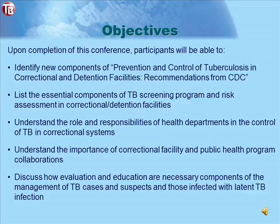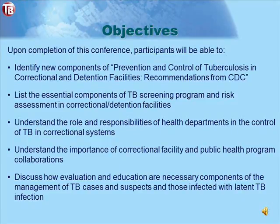The objectives for today's program are listed on this slide. TB control remains a public health challenge in correctional and detention facilities in which persons from diverse backgrounds and communities are housed in close proximity for varying periods. Effective TB prevention and control measures in correctional facilities are needed to reduce TB rates among inmates and the general U.S. population. In July 2006, the Centers for Disease Control and Prevention issued revised guidelines entitled Prevention and Control of Tuberculosis in Correctional and Detention Facilities. This web-based conference will summarize these recommendations and use a case example to illustrate the point.